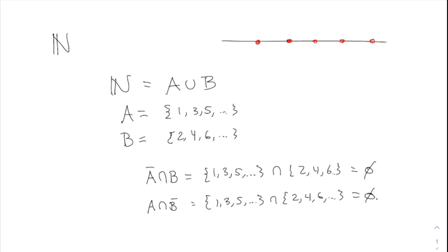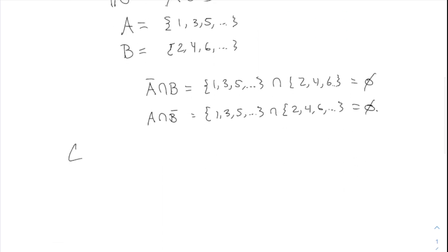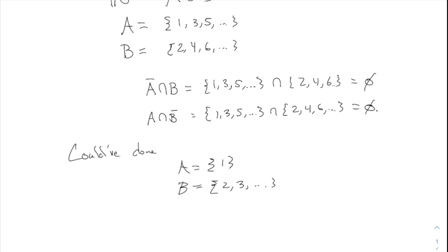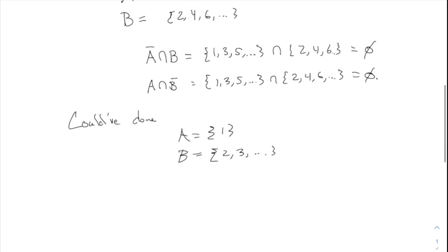There are many other ways to separate N. For instance, you could take A equals {1} and B equals everything else {2, 3, ...}. That's also a valid separation. The closures don't do anything here because the closure of a bunch of isolated points is just the same set again.